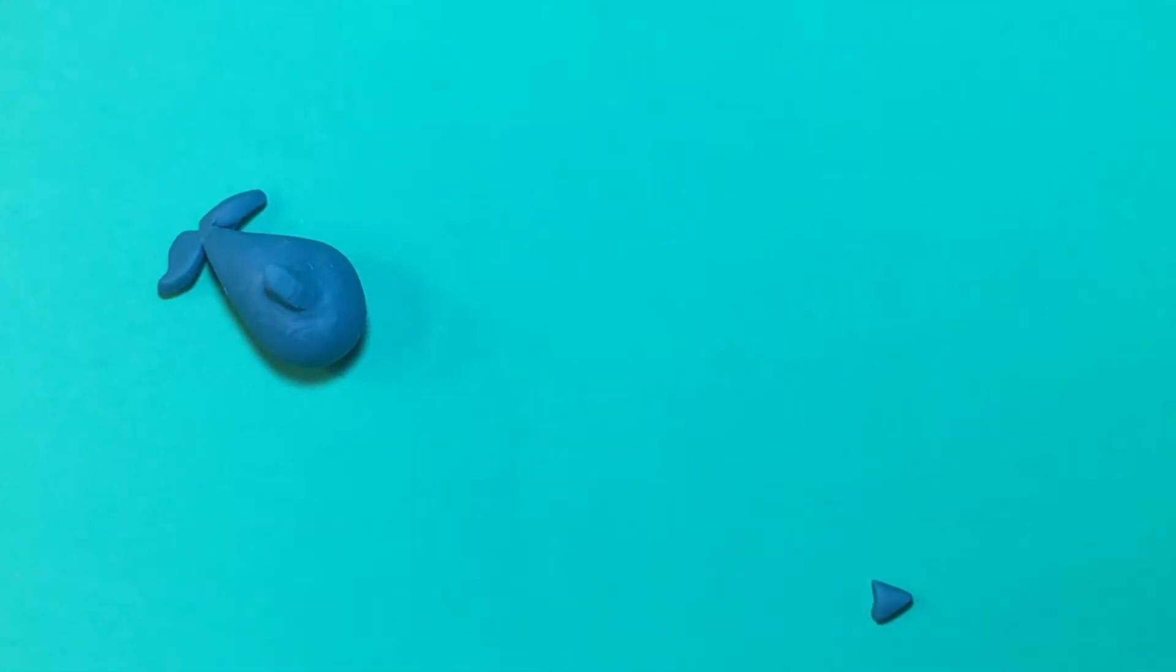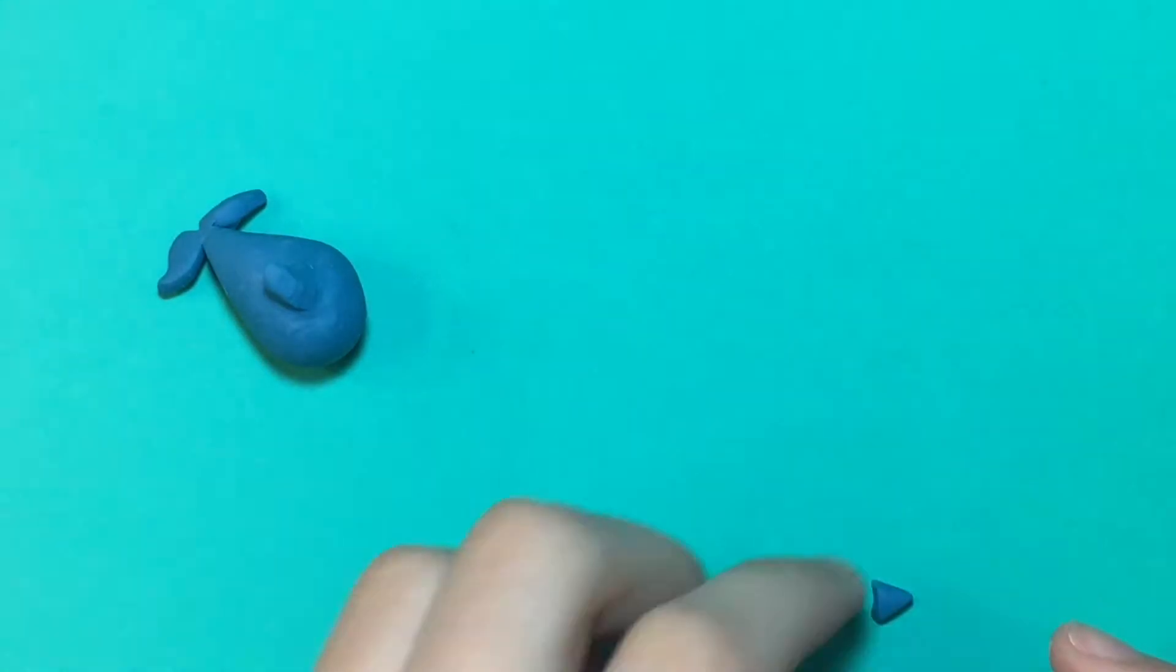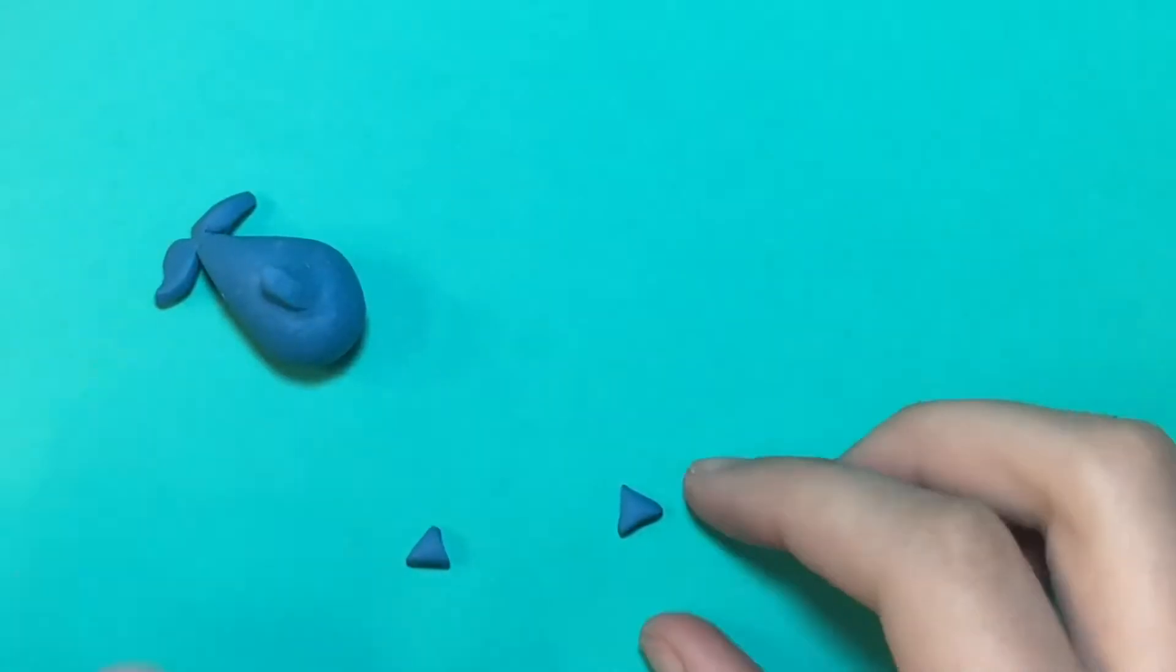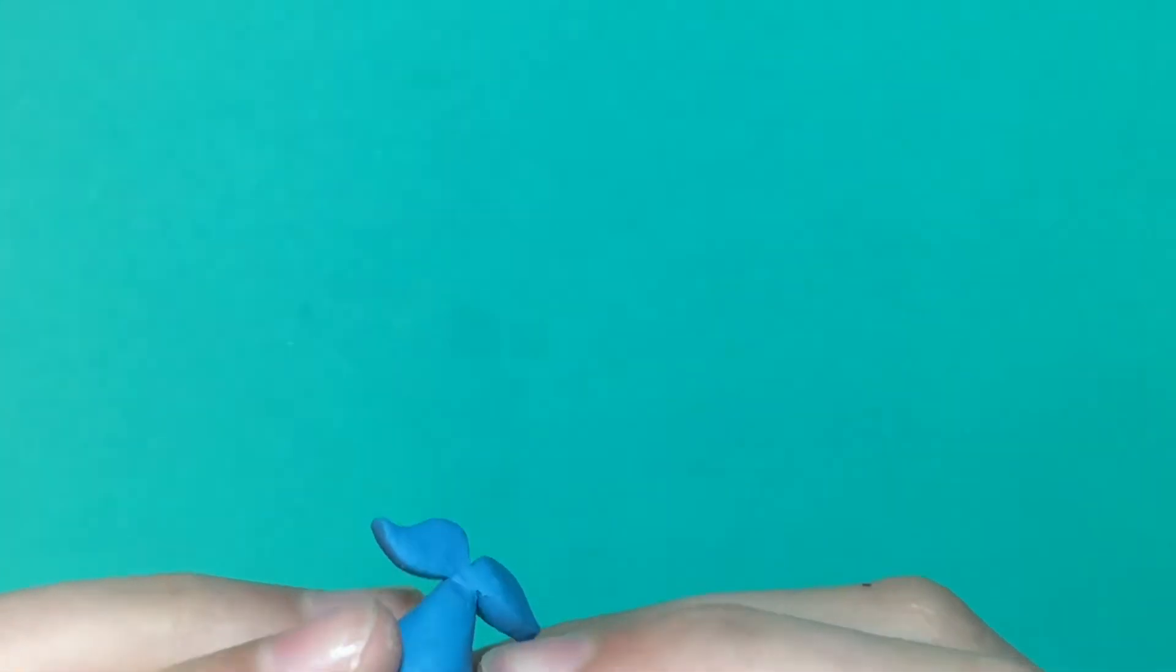Now I'm taking translucent clay and I'm rolling that out to be tapered on one end then I am flattening it and placing it on the bottom of my charm to be the belly of the dolphin.